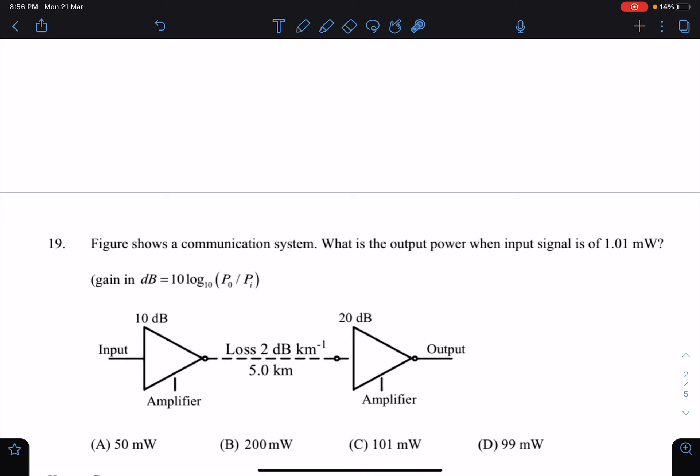Then it will amplify the signal by 10 decibels. Another amplifier is placed 5 kilometers apart, and due to the medium, the losses are 2 decibels per kilometer. Then this amplifier will amplify the signal by 20 decibels and we will get an output. Let's use this data.